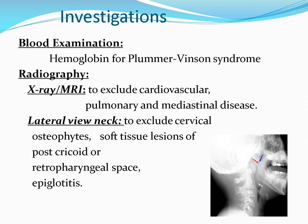Plummer-Vinson syndrome is due to iron deficiency anemia. Radiography investigations: plain X-ray to rule out any foreign body in the esophagus or heart enlargement with the right atrium pressing the esophagus. MRI helps rule out obstruction due to mass. Lateral view X-ray is done to see any osteophyte, post-cricoid tumor, laryngopharyngeal space infection, epiglottitis, and foreign bodies.